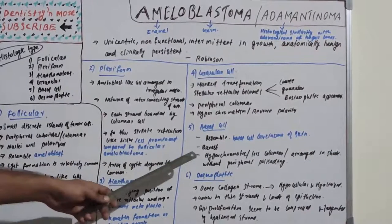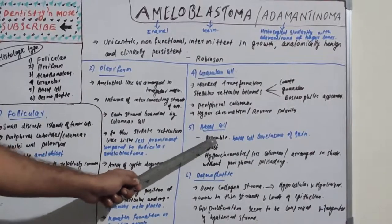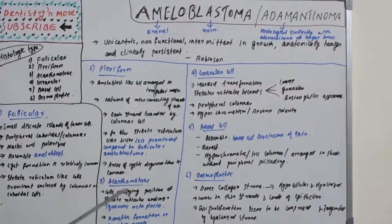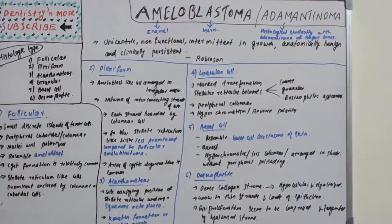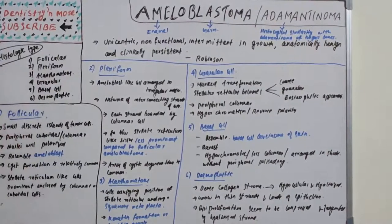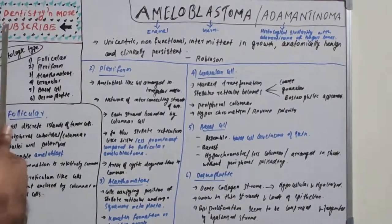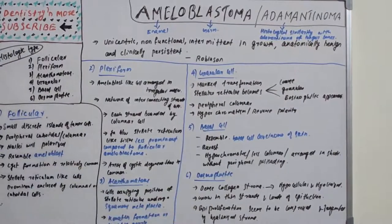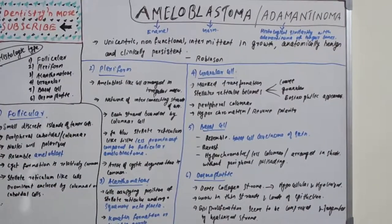The basal cell type resembles basal cell carcinoma of skin (BCC) — that is why it is called basal cell ameloblastoma. It is the rarest histological form of ameloblastoma. It shows hyperchromatic, less columnar cells arranged in sheets without peripheral palisading.